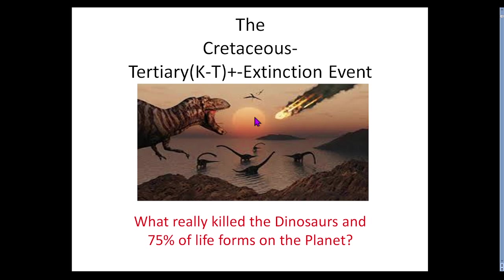If you ask anybody under the age of 40 what killed the dinosaurs, they're going to point to the sky and say it was some sort of an asteroid or a comet. But the reality is it is part of that, for sure — it didn't help — but maybe that was just the finishing touch. There may have been other things involved, such as climate change due to the shifting of the continents at the time.